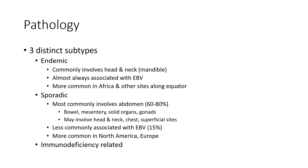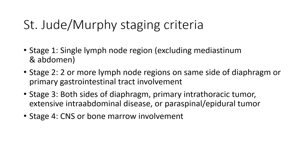Immunodeficiency-related is the third subtype. The staging system used is Murphy's staging criteria. Stage 1: single lymph node region excluding major sites. Stage 2: more than one node region on the same side. Stage 3: primary intraabdominal tumor, extensive intraabdominal nodal disease, paraspinal or epidural involvement. Stage 4: CNS or bone marrow involvement.